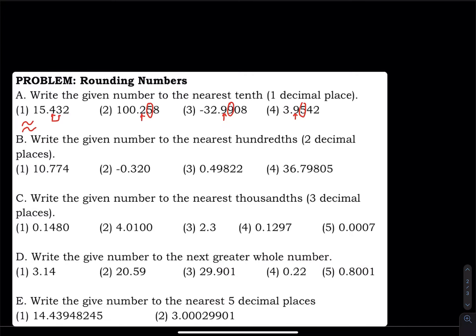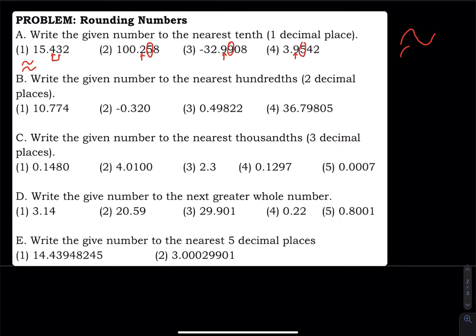The result is approximately 15.4. For the next number, 5 is greater than or equal to 5, so you add one to the 2, giving 3 — approximately 100.3. For the next one, you add one to the 9, but 9 plus 1 carries over to make the 2 become 3, so the result is approximately negative 32.0. Since I asked for one decimal place, you must keep the zero.